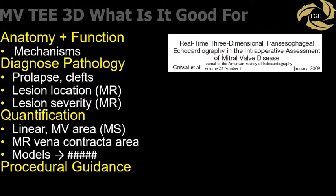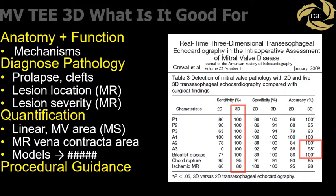One basic question to ask is: what additional information does 3D TEE add to assessing the mitral valve? It is well established that 3D has deepened our fundamental understanding of anatomy and function of normal and pathological mitral valves. It helps improve diagnostic accuracy of lesion localization, such as prolapse and clefts, identify mechanisms of mitral regurgitation, and quantify severity of mitral stenosis and regurgitation. 3D parametric maps measure new parameters quantifying mitral valve annular, leaflet, and subvalvular geometry throughout the cardiac cycle. It is indispensable in the guidance of percutaneous mitral valve procedures and post-operative assessment.